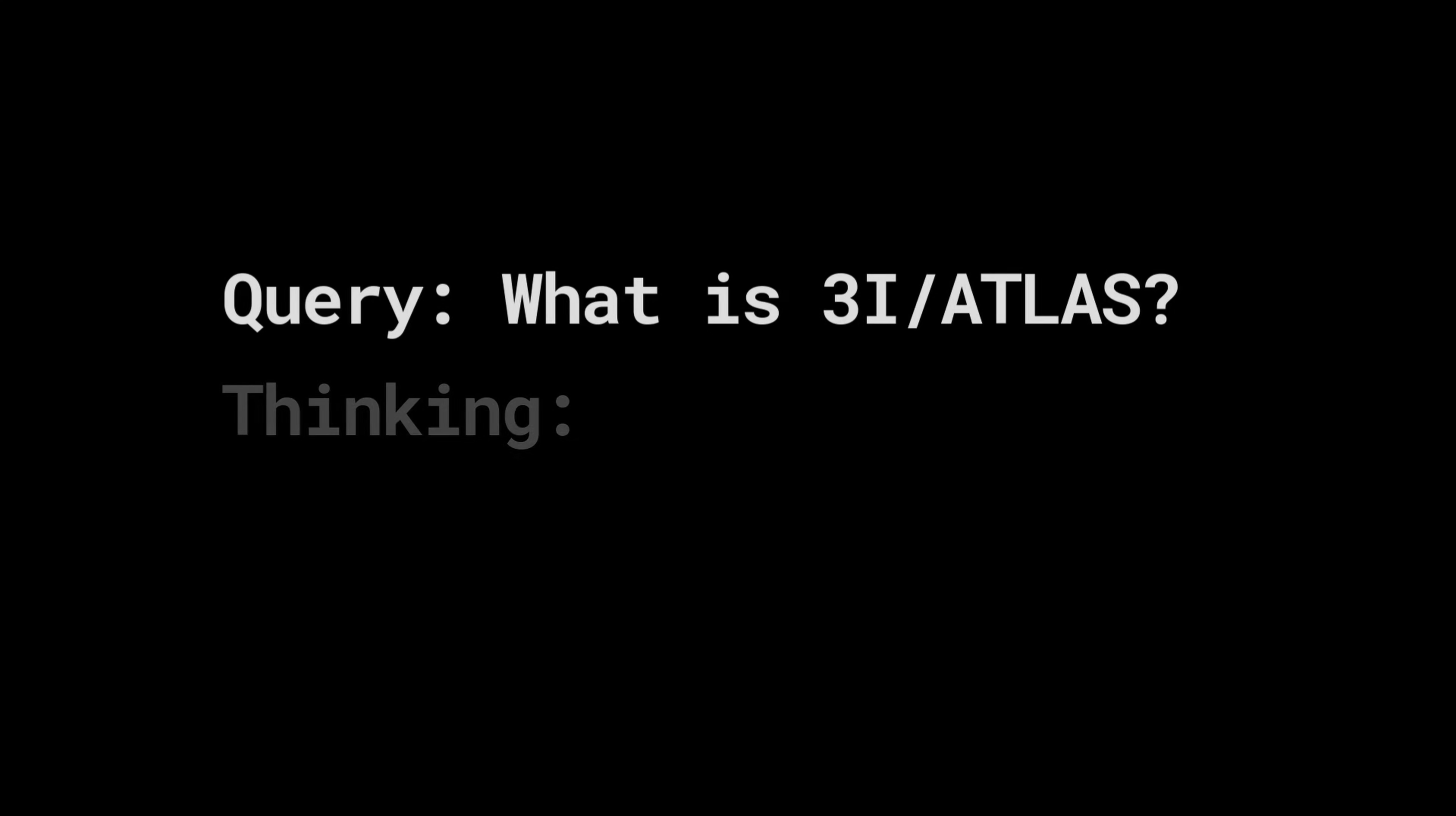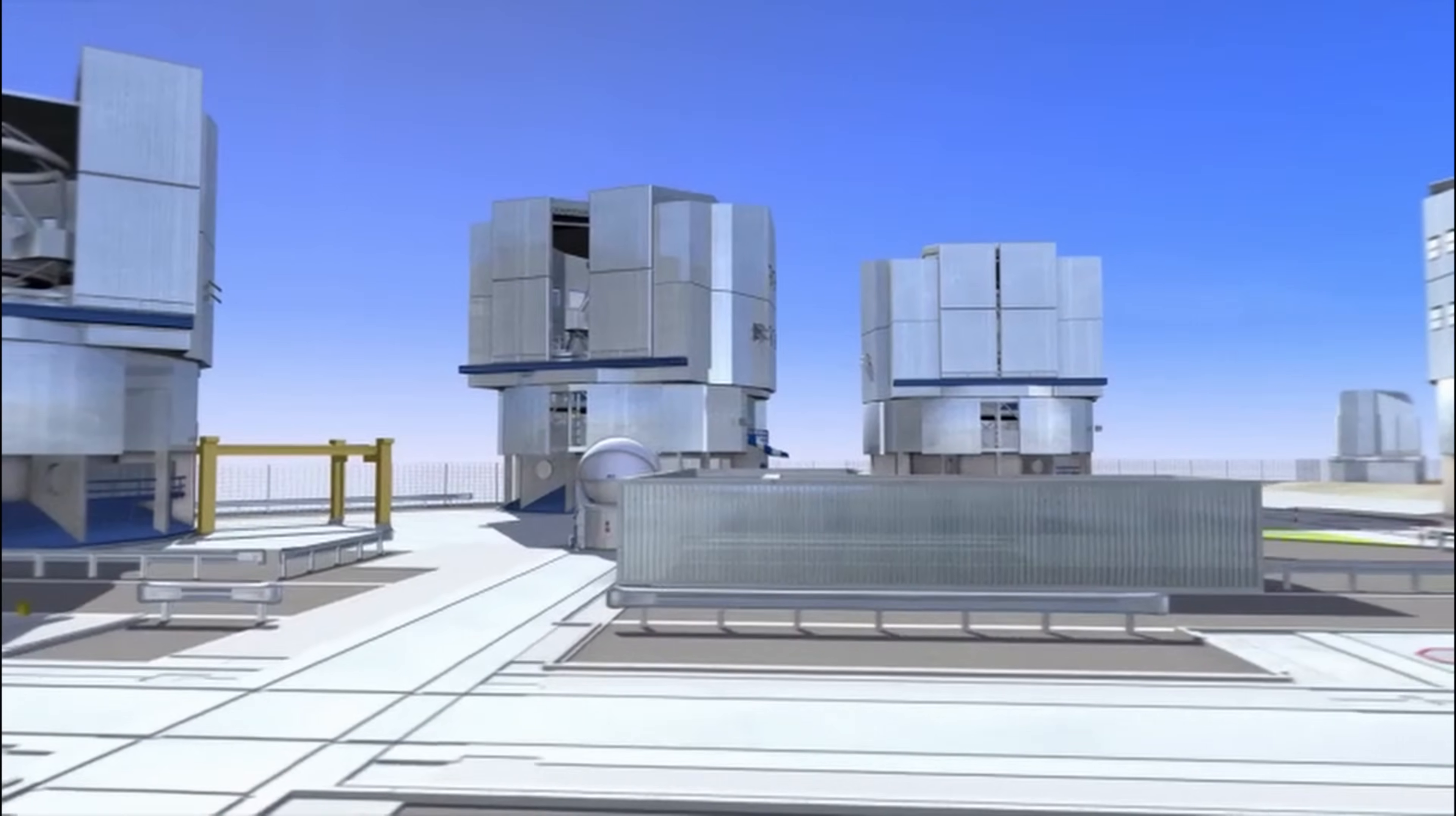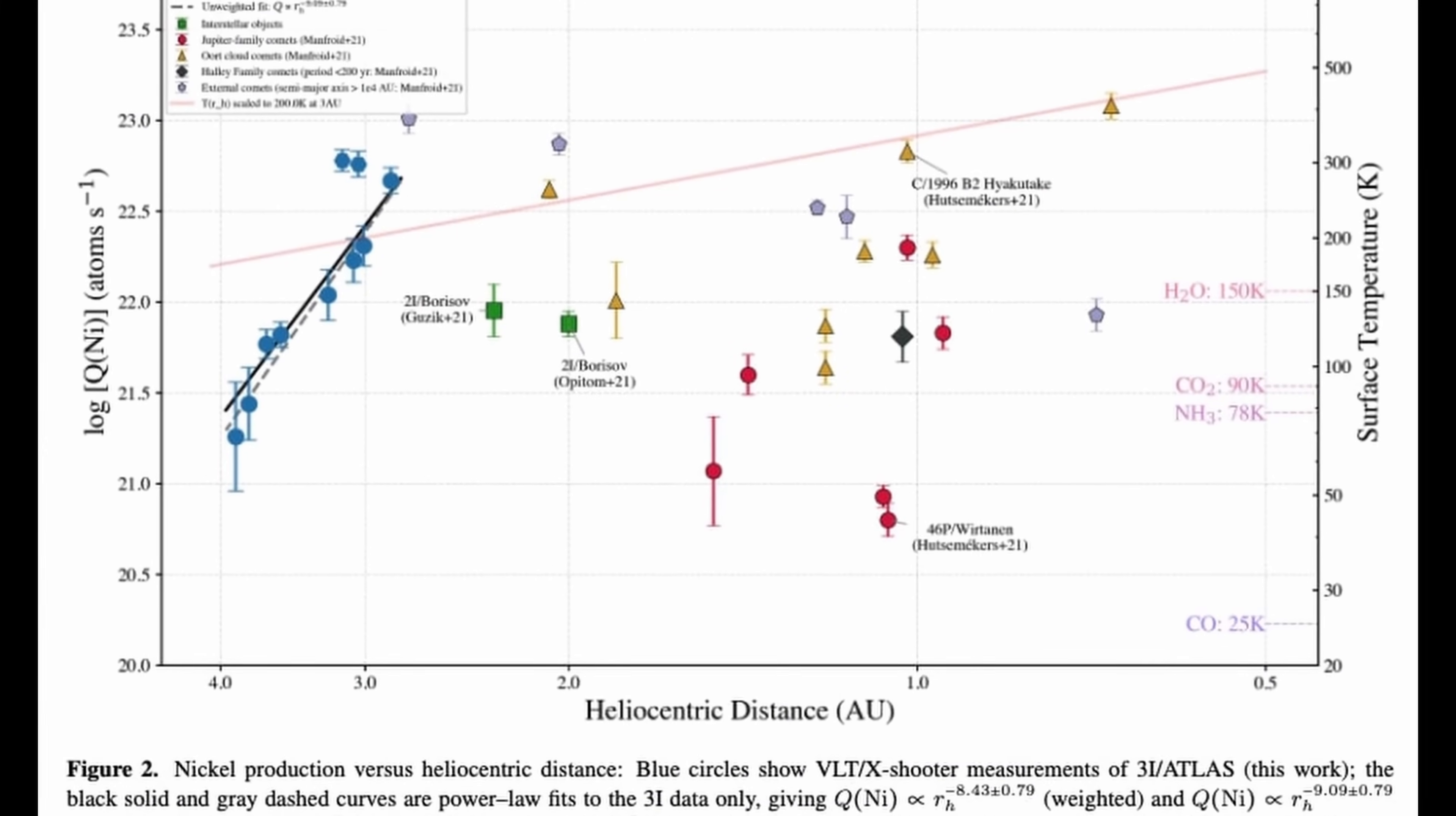While Gemini processed the full data set, one anomaly rose immediately to the surface. Spectral analysis observed by the Very Large Telescope in Chile revealed a strong signal of nickel, but no iron.